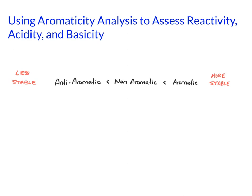You've already learned the stability trend for aromaticity, so the most stable is going to be a molecule that's aromatic, followed by non-aromatic, and then the least stable is going to be something that's anti-aromatic.